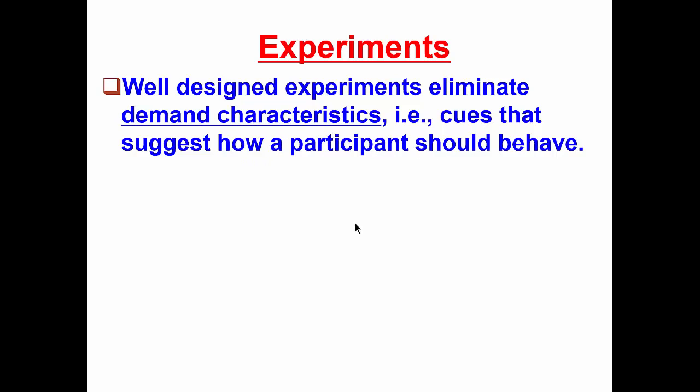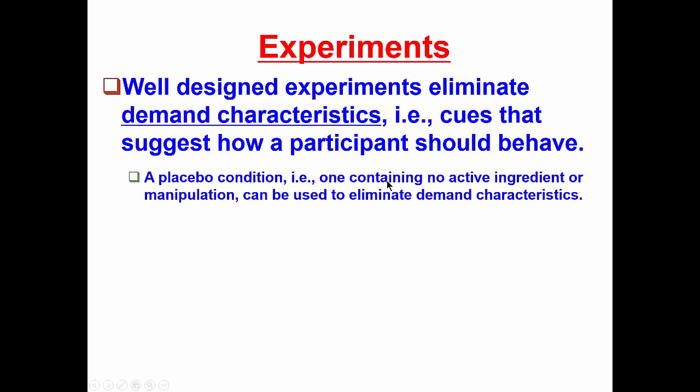One of the ways that researchers can control for demand characteristics is by using a placebo condition. That's a condition containing no active ingredient or manipulation, and this can be used to eliminate the demand characteristics. So, for example, if you are in a study and you're receiving a placebo, you might not know it.